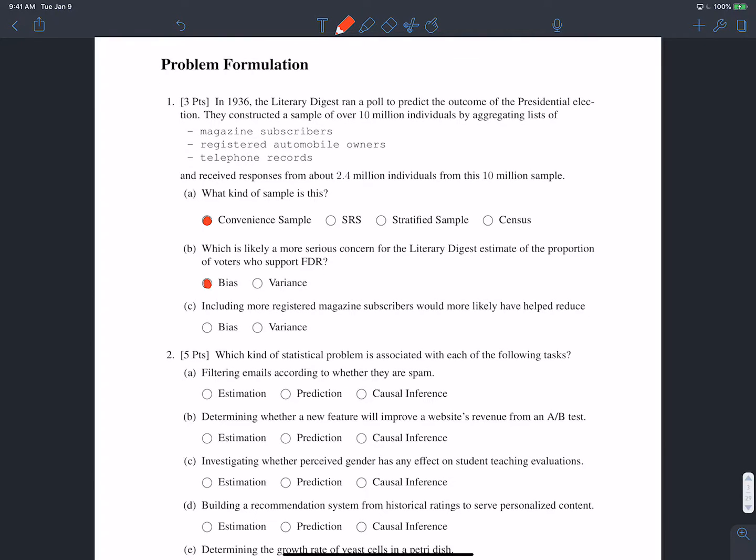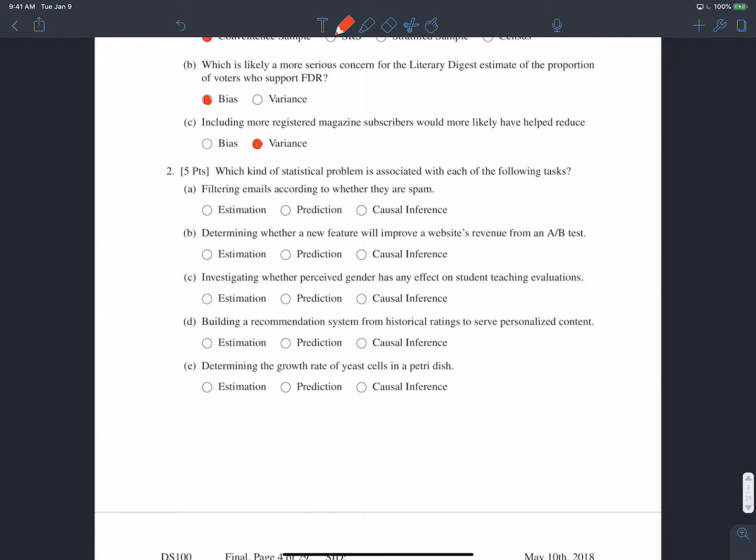Part C, including more registered magazine subscribers would more likely have helped reduce what? So it wouldn't have helped reduce bias because we're still sampling from the same group of people, the same people who own cars and magazines and telephones. So it wouldn't reduce bias. So by process of elimination it's probably going to reduce variance.